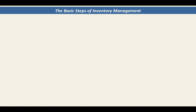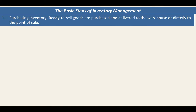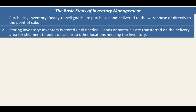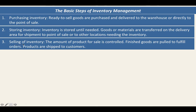We will discuss inventory visibility in the later part of this lesson. So let us first discuss the basic steps of inventory management. First is purchasing — ready-to-sell goods are purchased and delivered to the warehouse or directly to the point of sale. Then after purchasing comes storing of inventory. Inventory is stored until needed, and goods or materials are transferred to the delivery area for shipment to point of sale or to other locations needing the inventory.